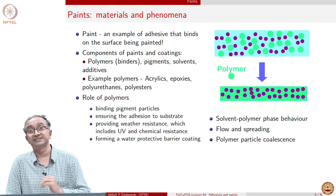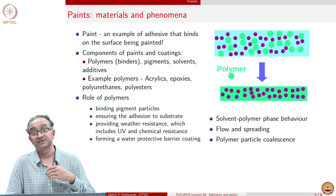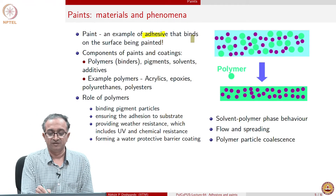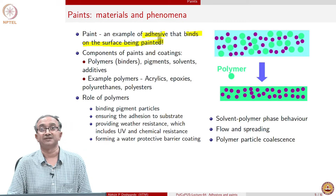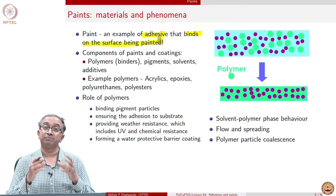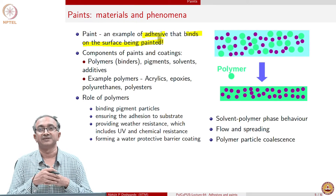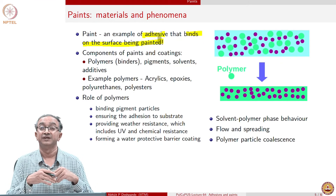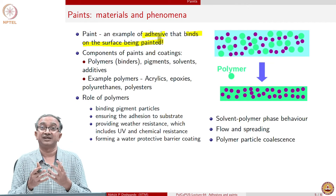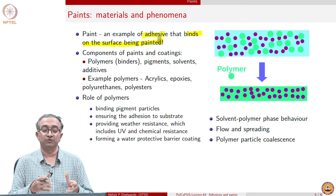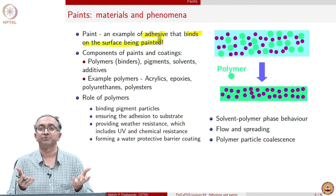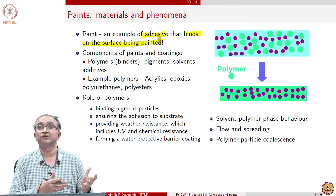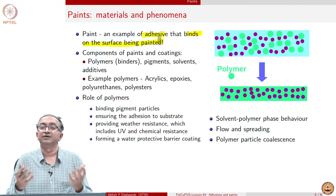Now let us look at the other example of a product where interaction with the other substrate is crucial — paint. Paint is nothing but actually an adhesive which is binding on the surface being painted. When we apply a paint, we want it to stick to the surface, so adhesion is involved, and at the same time we want the outer surface to give colour or any other aesthetic feature. We can also do paints and coatings for anti-corrosion protection or scratch-proof protection, so paints and coatings can play several roles in addition to giving aesthetically pleasing surfaces.